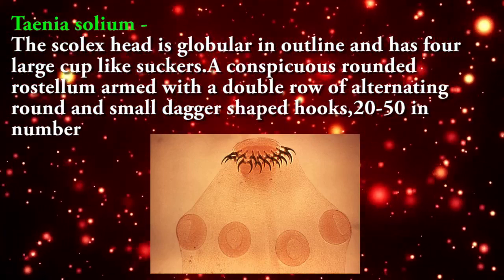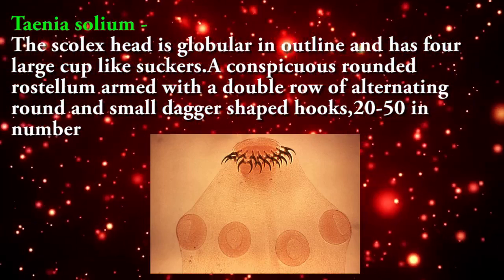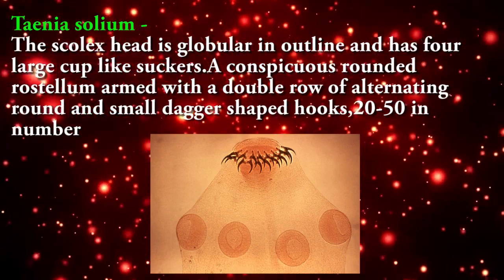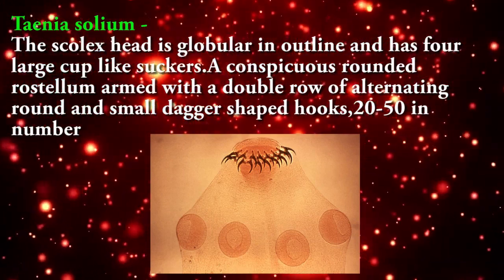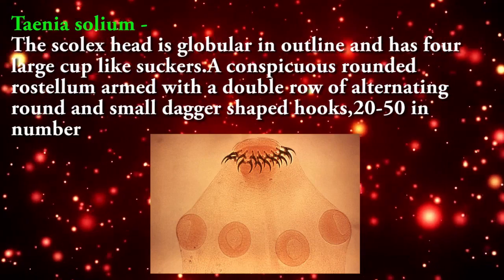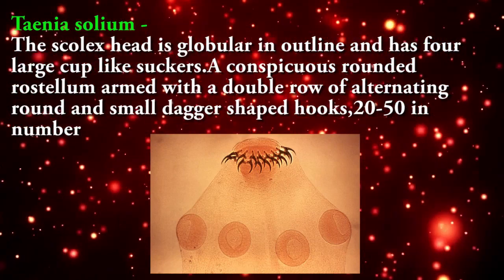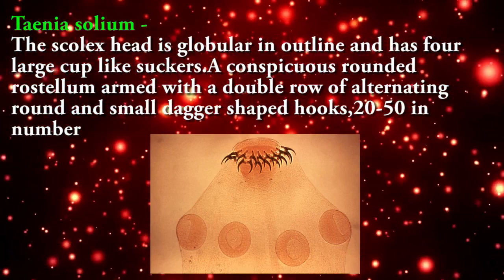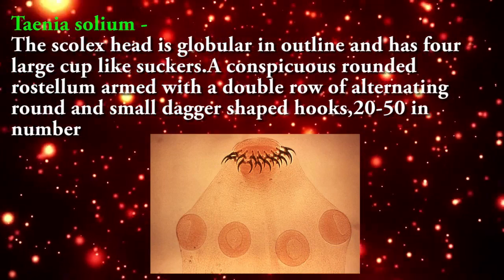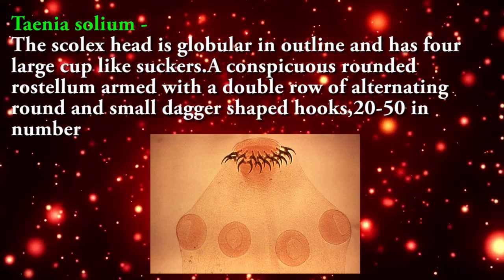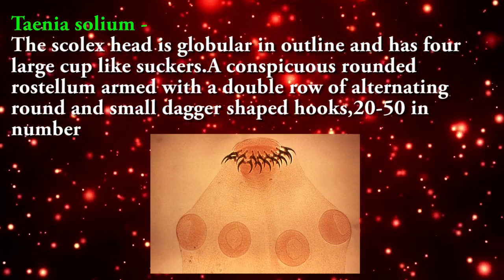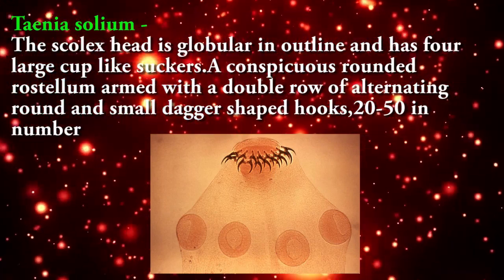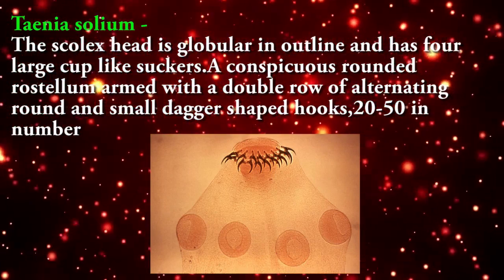Scolex: Taenia solium — the scolex head is globular in outline and has four large cup-like suckers, a conspicuous rounded rostellum armed with a double row of alternating large and small dagger-shaped hooks, 20 to 50 in number.